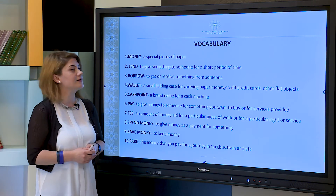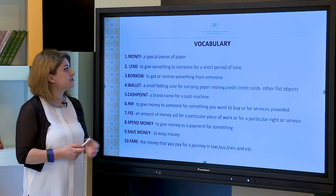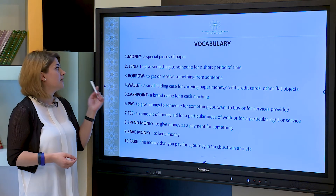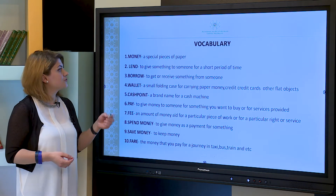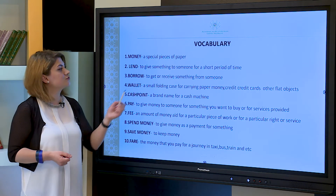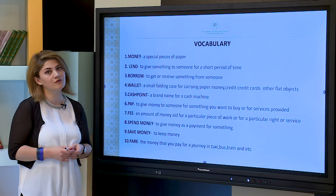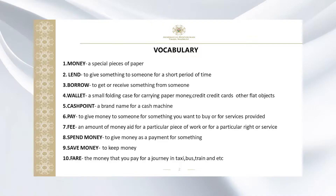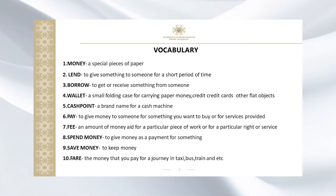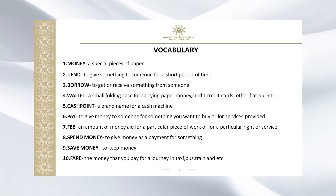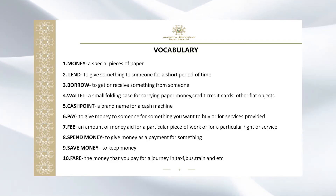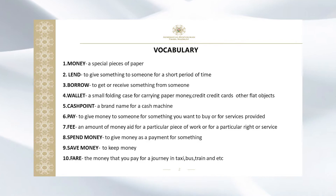The first word: money — special pieces of paper. The second word: lend — to give some things to someone for a short period of time. The third word: borrow — to get or receive something from someone. Fourth: wallet — a small folding case for carrying paper money, credit cards or other flat objects.